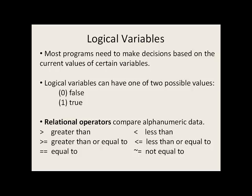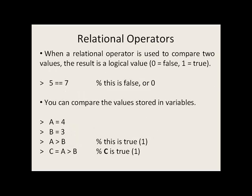Relational operators allow you to compare numbers and characters. When a relational operator is used to compare two values, the result is a logical value — 0 for false or 1 for true. So in this example, we ask the question: is 5 equal to 7? This is false, or 0. You can compare the values stored in variables as well. So if a is 4 and b is 3, and we ask is a greater than b, this is true, or 1. And we can store this value in a variable by saying c is equal to a greater than b.